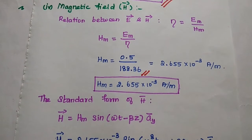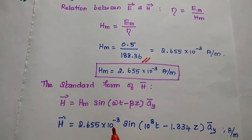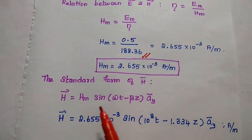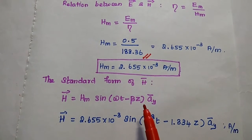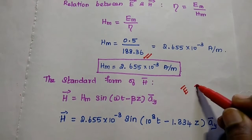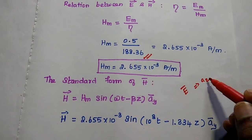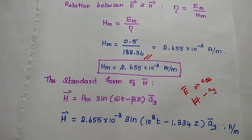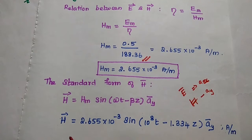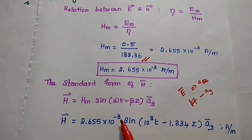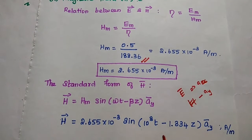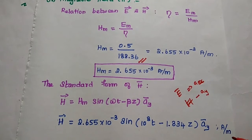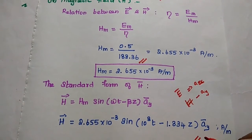Finally, we write the standard expression for the magnetic field: H vector = Hm sin(ωt − βz) a_y. Since the electric field is in the a_z direction, the magnetic field is in the a_y direction. Therefore, H vector = 2.655 × 10⁻³ sin(10⁸t − 1.334z) a_y amperes per meter.